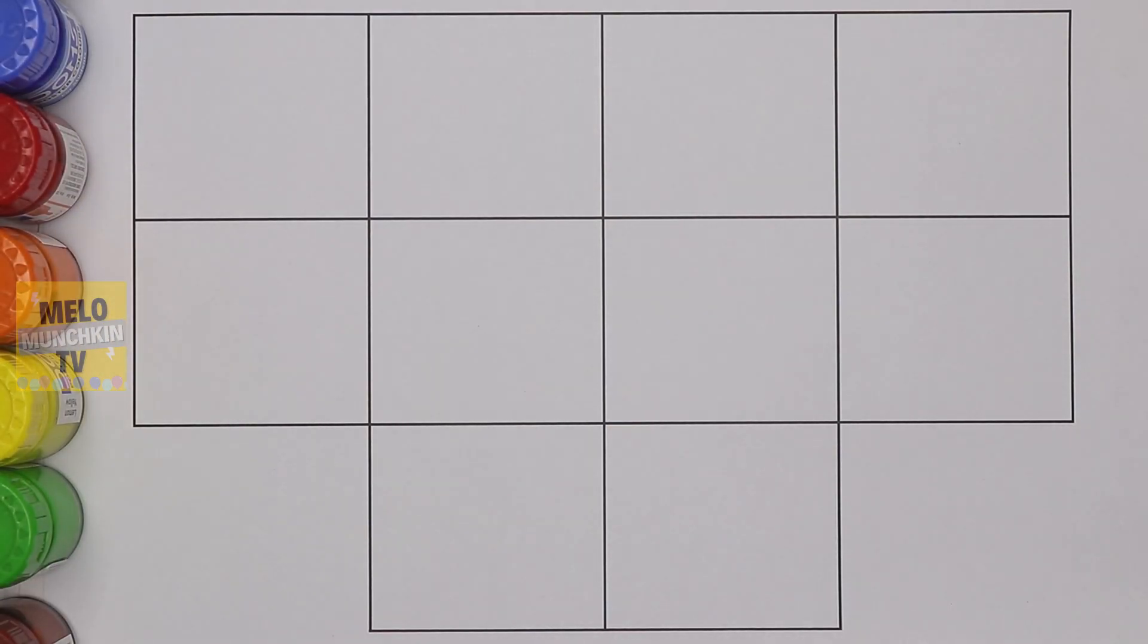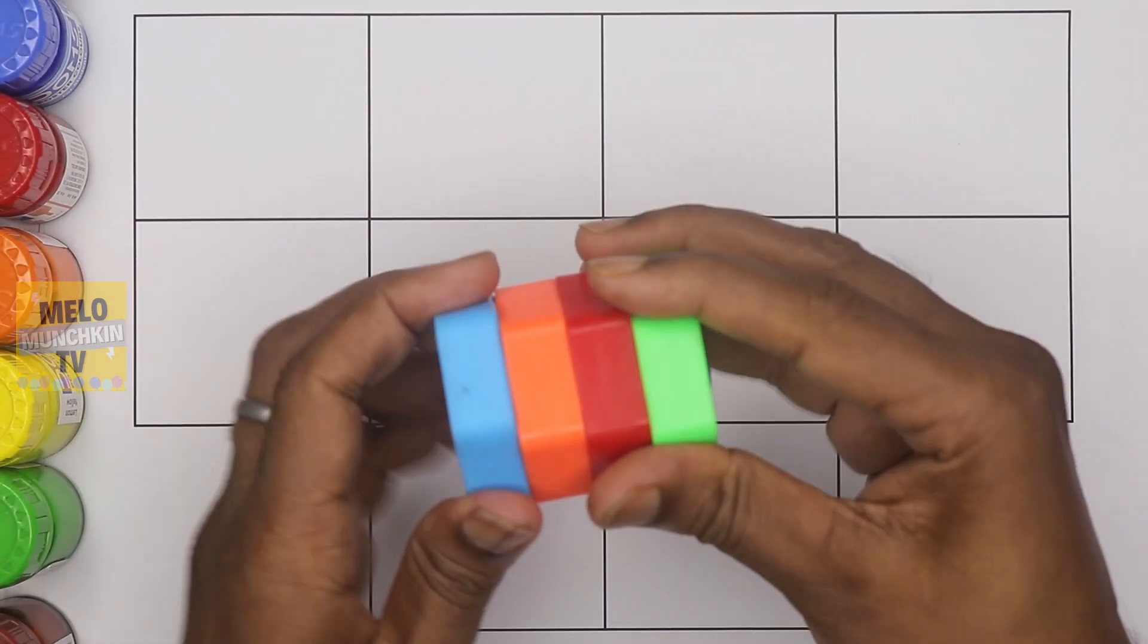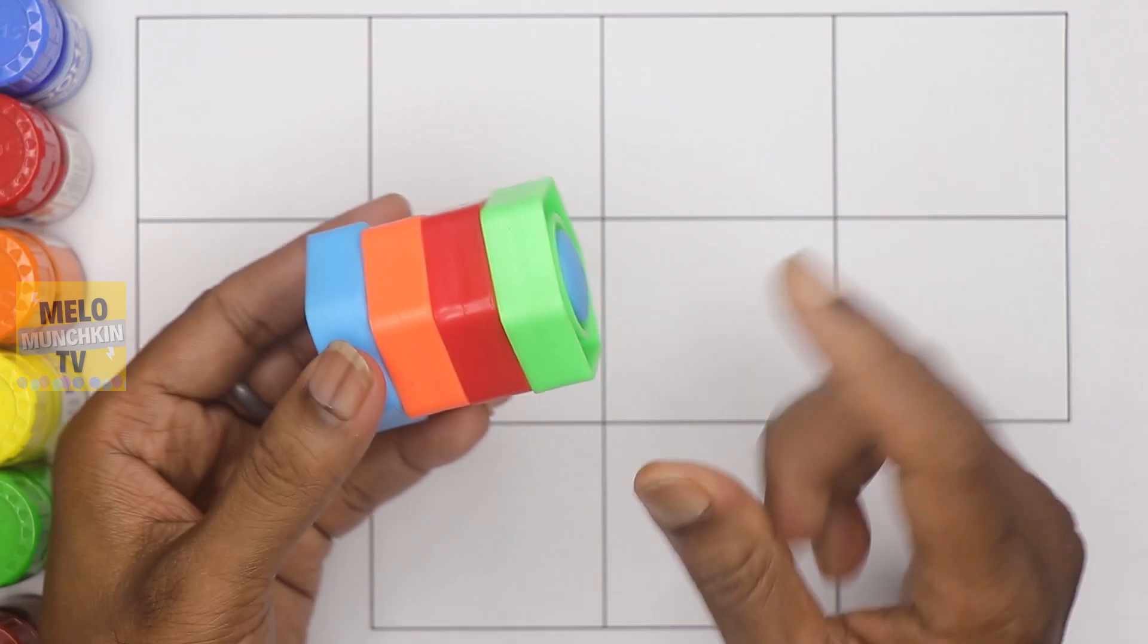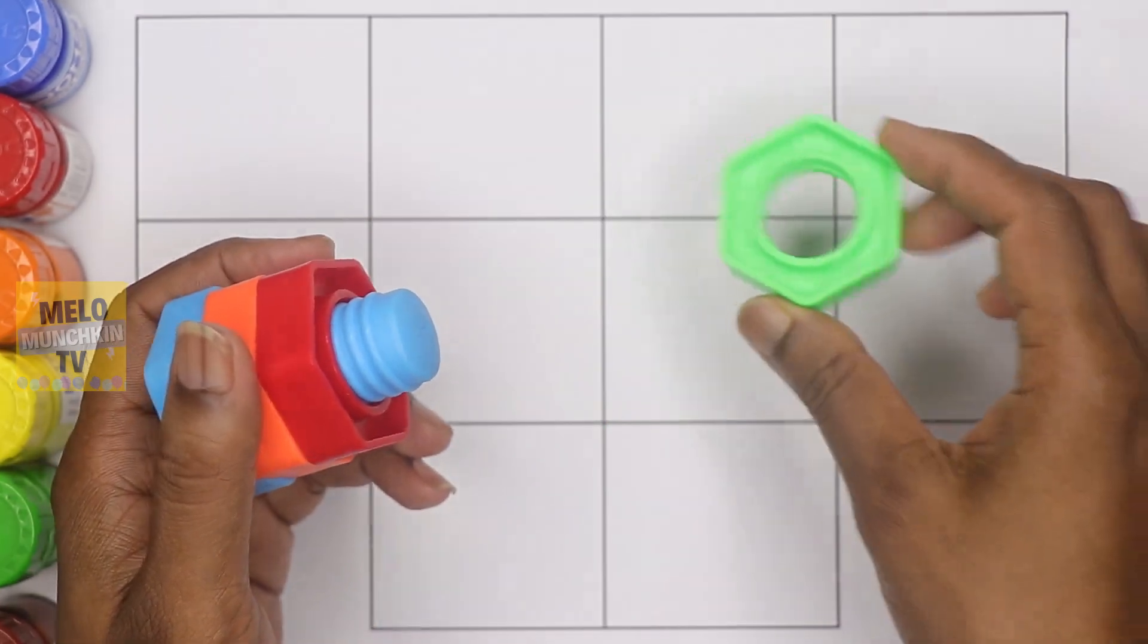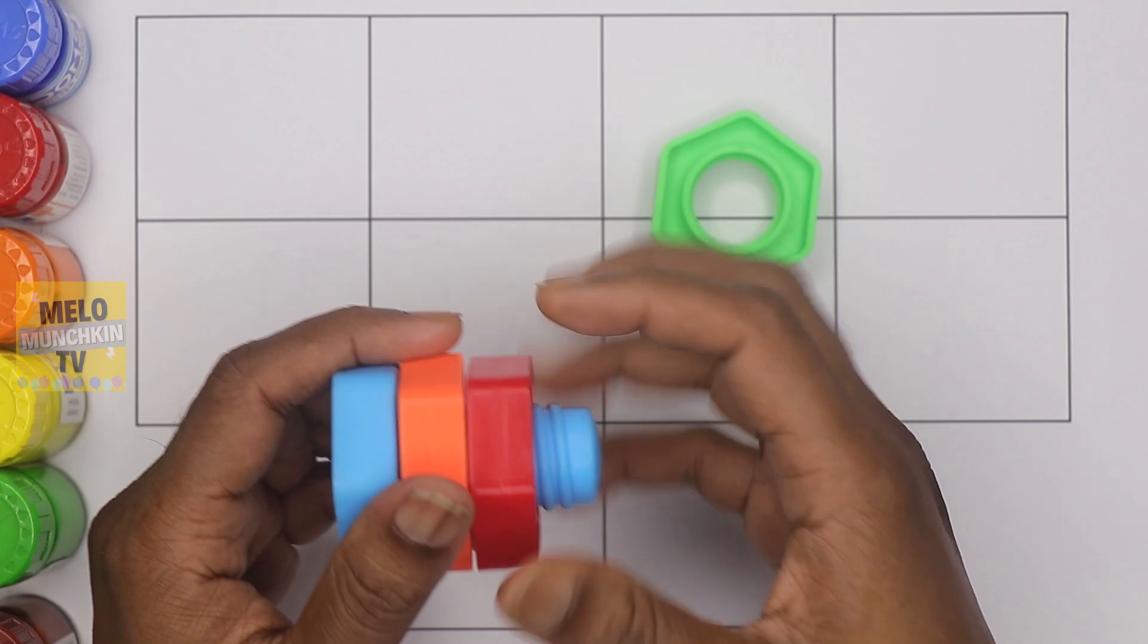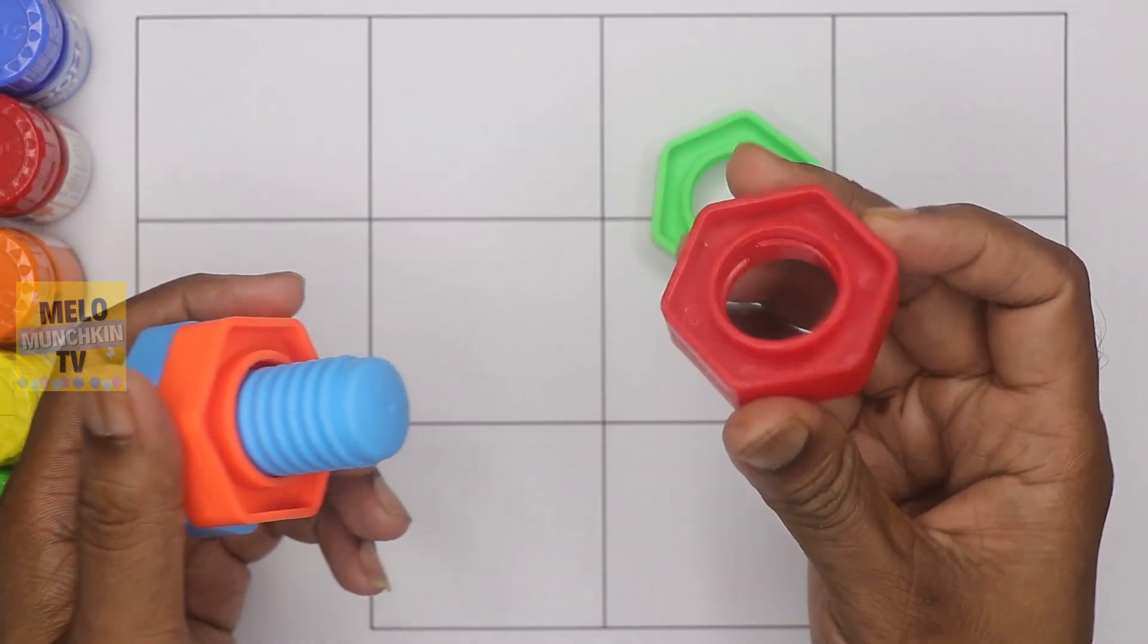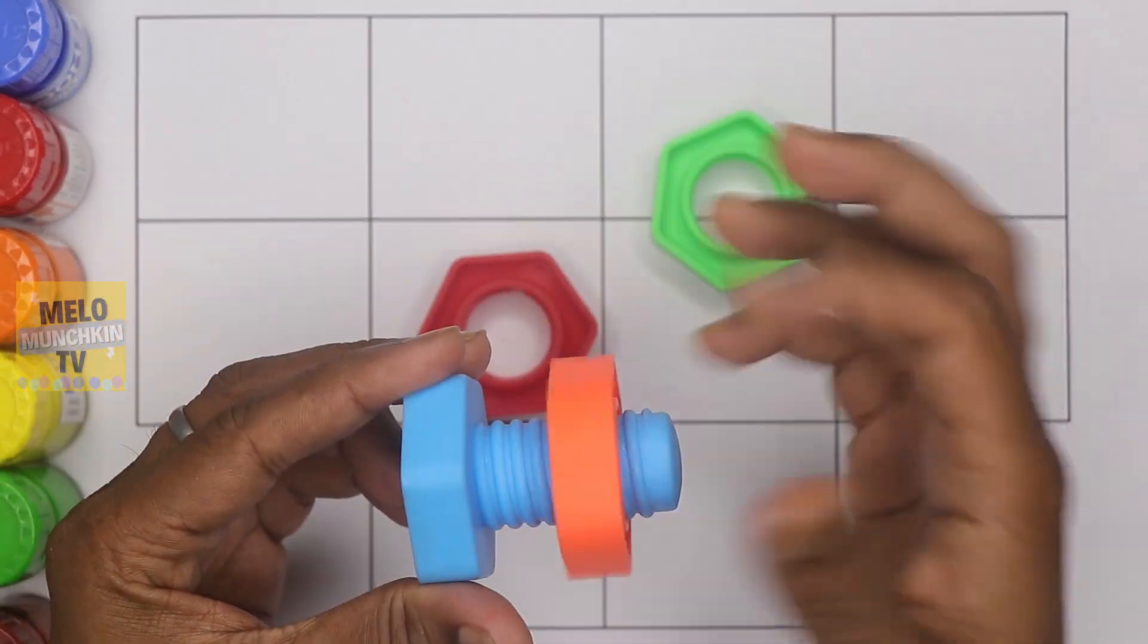Hello kids! Today in this video we are going to learn numbers from 1 to 10. But before that, we'll learn some colors. Which color is this? This one is green color. This is red color.